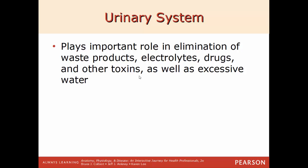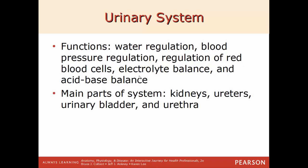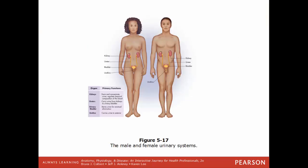The urinary system plays an important role in eliminating electrolytes, drugs, waste products, and excess water. Whatever the body can't absorb or use gets filtered and urinated out. Main functions include regulating water in the body, blood pressure regulation, regulation of red blood cells and electrolyte balance, and controlling acid-base balance. Main parts are the kidneys, ureters, bladder, and urethra. The kidneys form the urine, which is collected through the ureters into the bladder and out the urethra. In males, the urethra is about four times as long as in females.